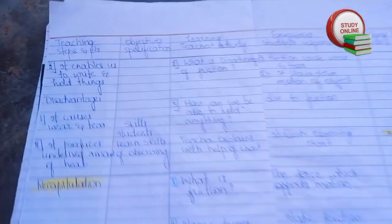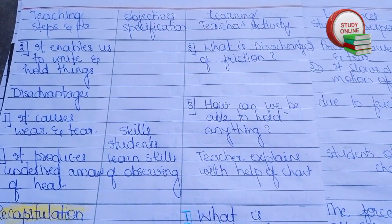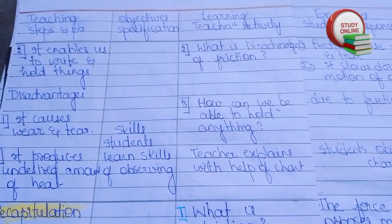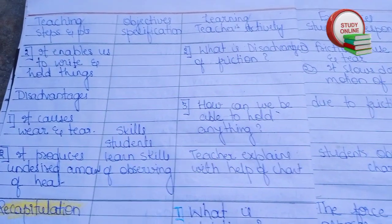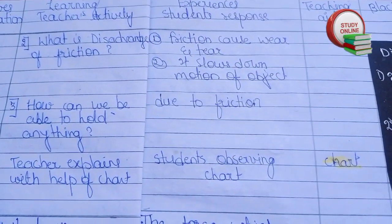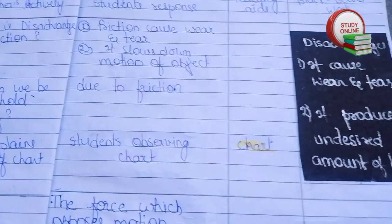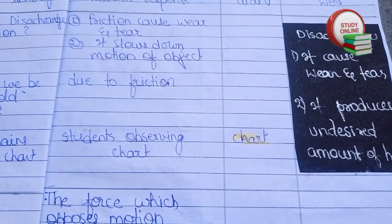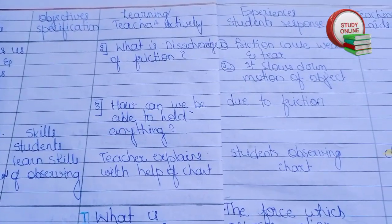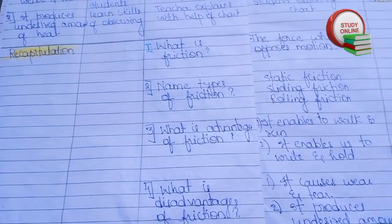Now let's see the rest of Presentation 2. Here you can see the remaining questions we have to ask students and the answers we expect from them. Here you can see the blackboard work — we paste it like this. The teacher explains with the help of a chart, students observe the chart, and for the teaching aid we write 'chart.'